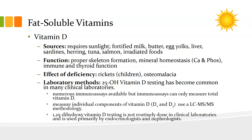25-hydroxy vitamin D testing has become very common in clinical laboratories due to widespread vitamin D deficiency in the population. Standard immunoassays can measure total vitamin D; to measure individual components — vitamin D2 or D3 — you need LC-MS/MS (liquid chromatography tandem mass spectrometry). 1,25-dihydroxy vitamin D testing is not routinely done in clinical labs and is used primarily by endocrinologists and nephrologists. That is the activated form of vitamin D, after conversion first in the liver and then in the kidneys.